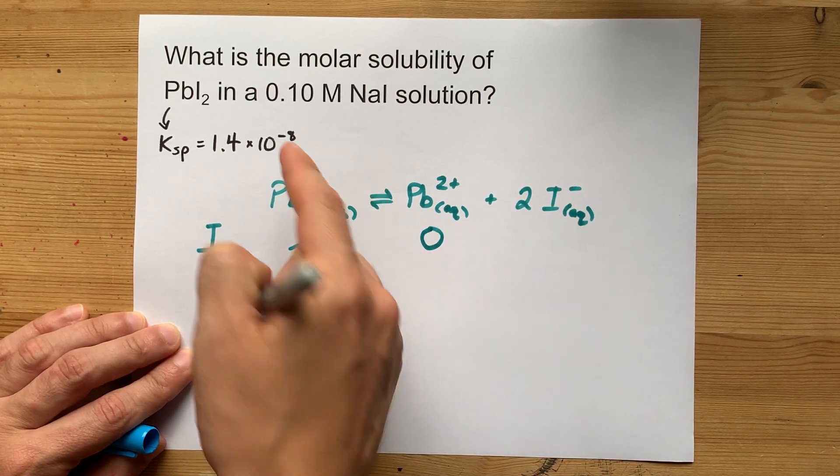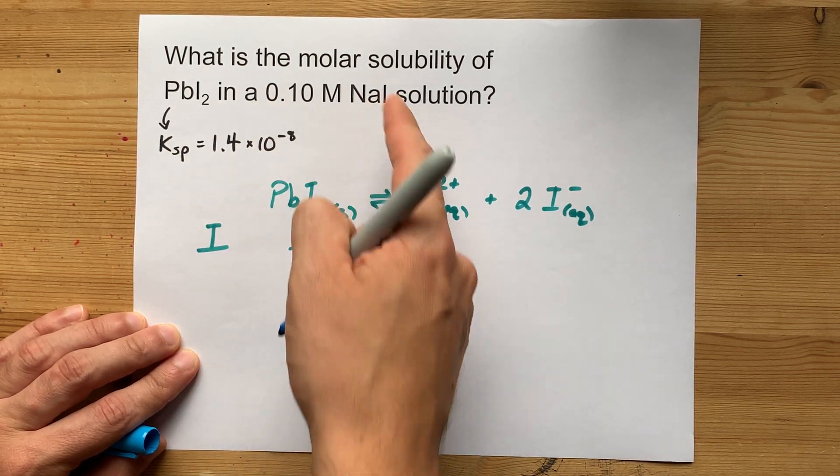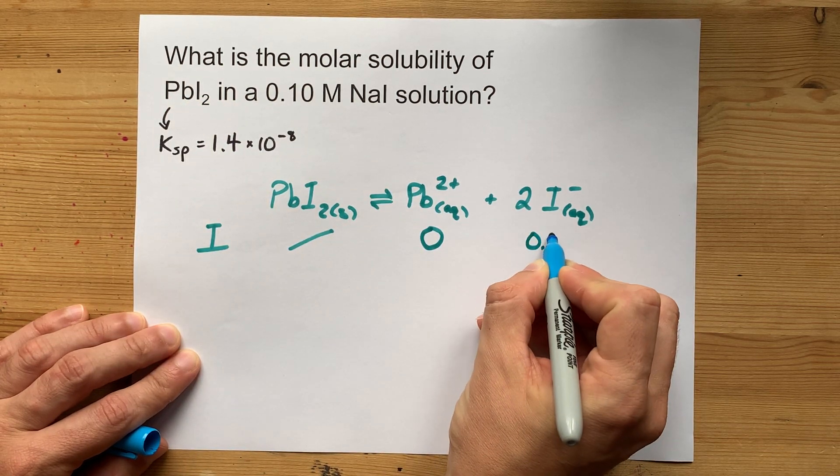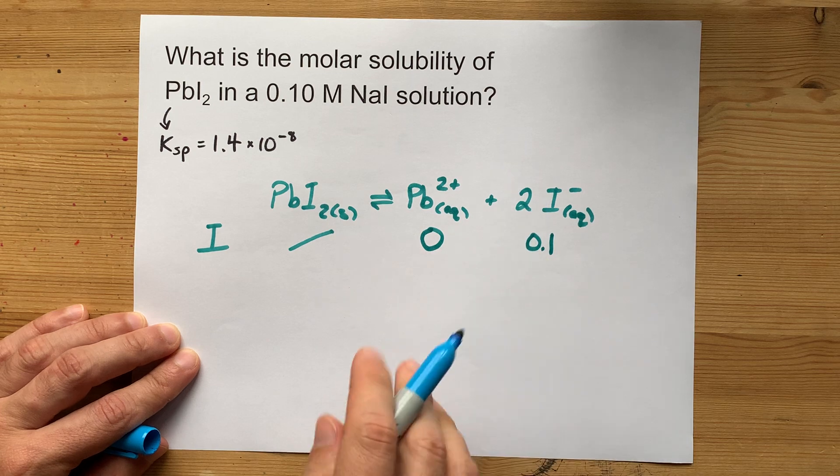This is why it's important to know the initial concentration of iodide to know how much of this will dissolve. We're actually starting with 0.1 moles per liter of that iodide.